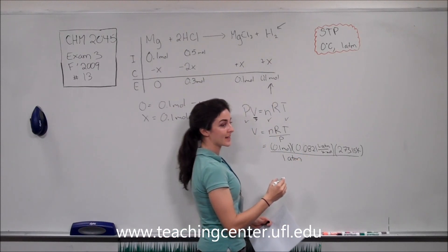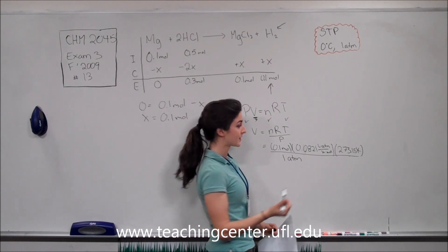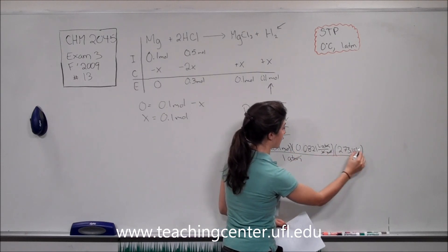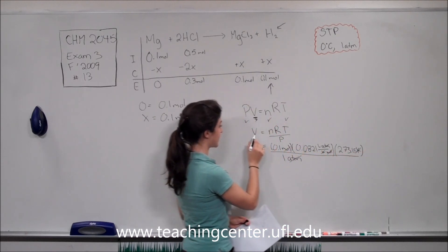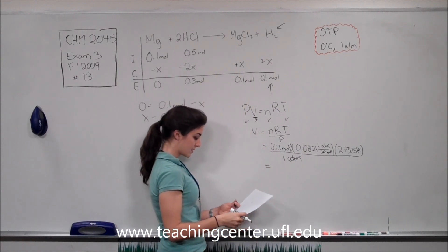Now we should cancel like our units so we know that we did our math correctly. Atmospheres cancel, moles cancel, Kelvin cancel, and we're left with liters, and volume is in liters, so we have that correct.